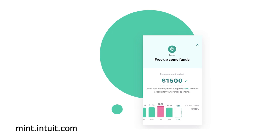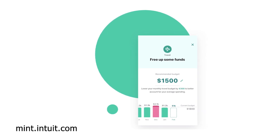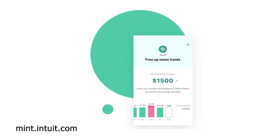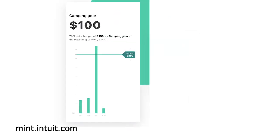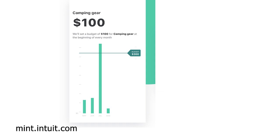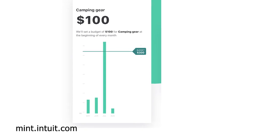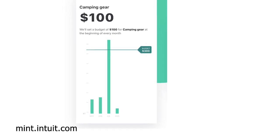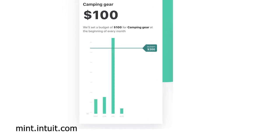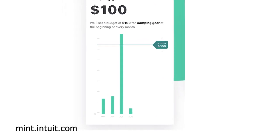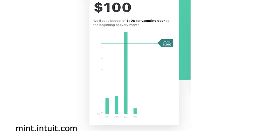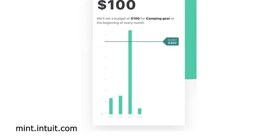Whether it's a monthly breakdown of income versus expenses, a category breakdown further filtered by date, or even something as simple as a budget progress bar to easily see whether they're nearing their custom-defined threshold.